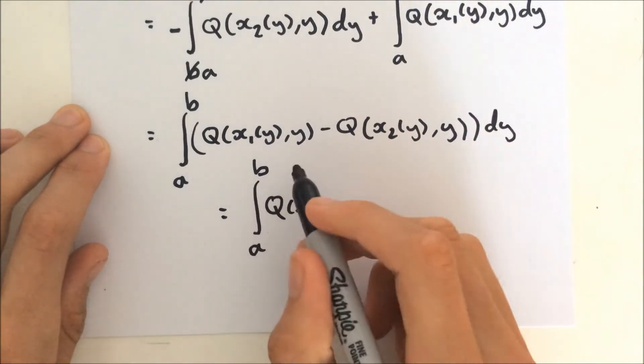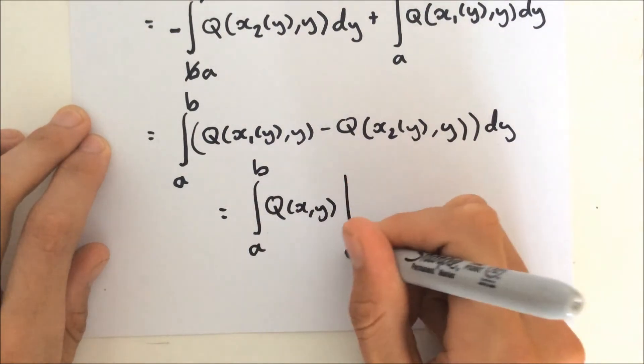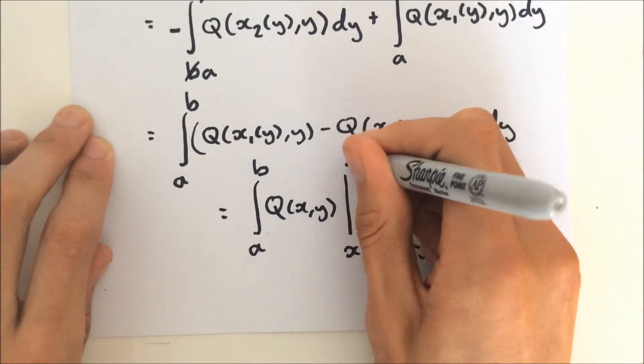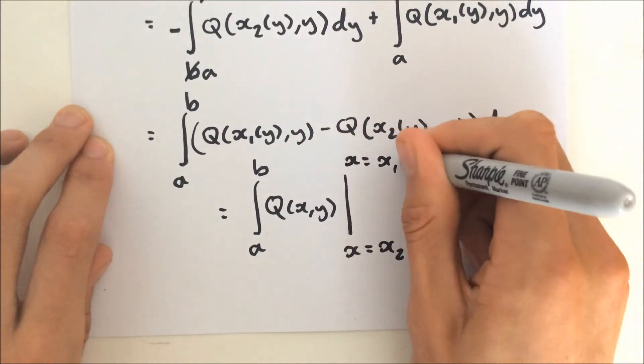Where x is equal to x2, y, and x is equal to x1, y.